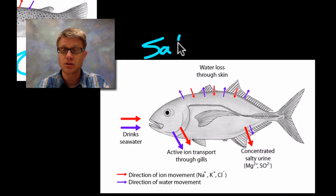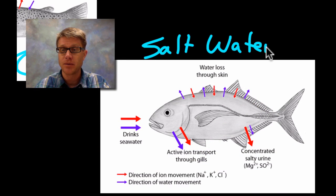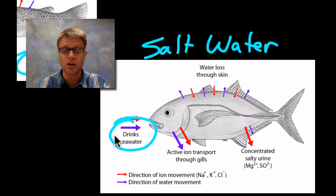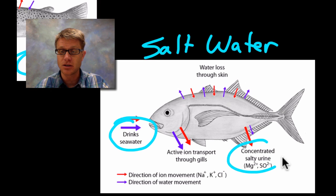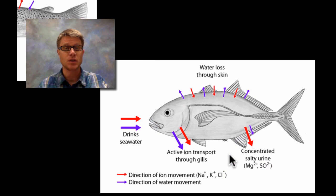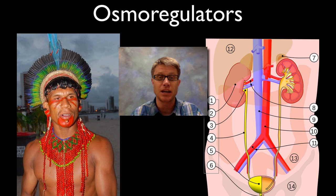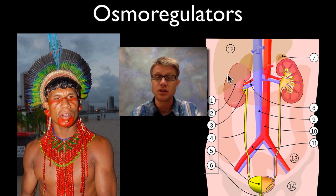If you move to a saltwater fish, we have the opposite problem. The salt water has a higher solute concentration, so water keeps flowing out of them. They have to actually drink salt water, and their urine is going to be really, really concentrated. We're not fish, we're not brine shrimp — we live on land. So how do we osmoregulate? We osmoregulate using the kidney.